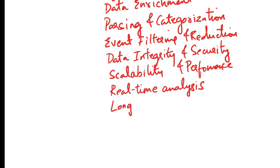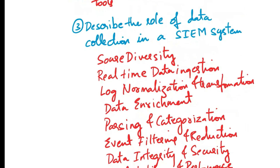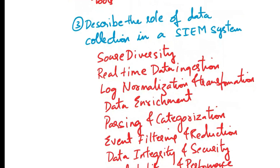While real-time analysis is crucial, historical data is also valuable for forensic investigations, compliance audits, and trend analysis. Data collection processes often involve archiving and retaining data for extended periods. In summary, the role of data collection in a SIEM system is to capture, normalize, enrich, and organize security-related data from diverse sources, serving as the foundation for threat detection, incident response, compliance reporting, and overall security management.